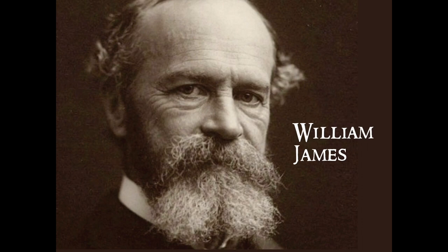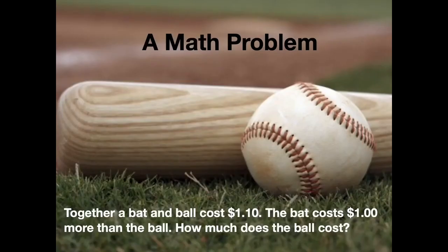Critical thinking doesn't come naturally. We shouldn't assume that people instinctively know how to think critically. Let me ask you a question: together, a bat and ball cost $1.10. The bat costs $1 more than the ball. How much does the ball cost? If you're like most people, you probably think the ball costs $0.10. If that were true, then the bat would cost $1.10, which would mean that the total cost would be $1.20, not $1.10. The correct answer is $0.05, and the bat costs $1.05, adding up to $1.10.